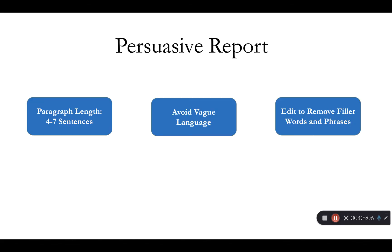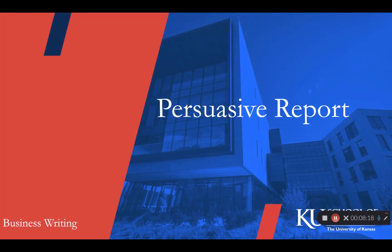In addition to following these examples, review the information from the lectures as you edit your report. Paragraphs should be four to seven sentences. Avoid vague language and edit to be concise. Please refer to these examples as you write and edit your report, and make sure you are not copying these examples exactly — instead, use them to guide your writing.